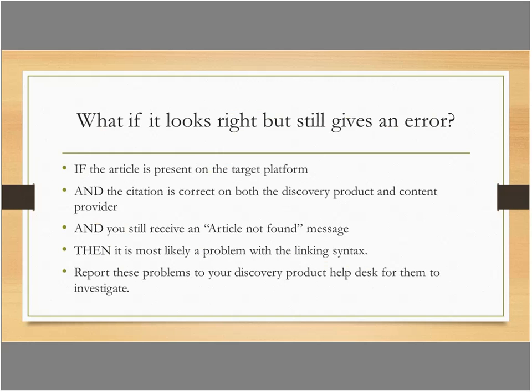What if the citation looks right but it's still an error? If the article is present, the citation is correct on both sides, and you're still getting an 'article not found' message, it's probably a problem with the linking syntax—something behind the scenes with the open URL linking or direct linking set up with your discovery service. In that case, it's best to just report the problems to your discovery product so they can investigate, as they're best equipped to handle it. We had one product where for about a year, every result for their databases resulted in an error because they did not play well with Summon's linking syntax. That's been resolved, but the problem still crops up from time to time.